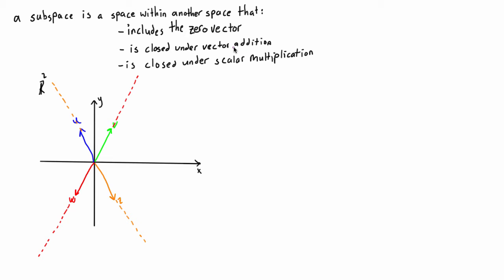Now we can talk about the condition that a subspace includes the zero vector. We always draw vectors in standard position, and you can easily imagine that if we multiplied all these vectors by zero and added them together, we'd get the zero vector. That's just part of the definition. Always draw things in standard position, and it should click in your brain that yes, this thing should include the zero vector.